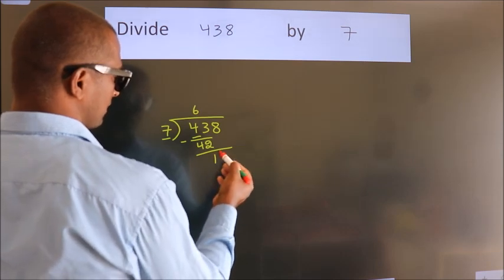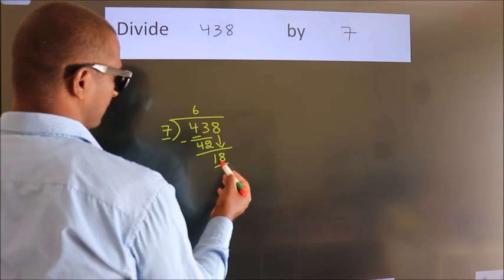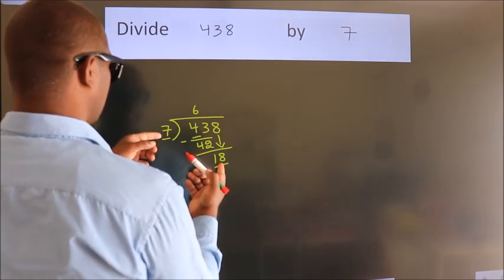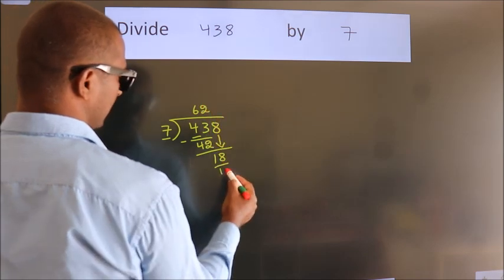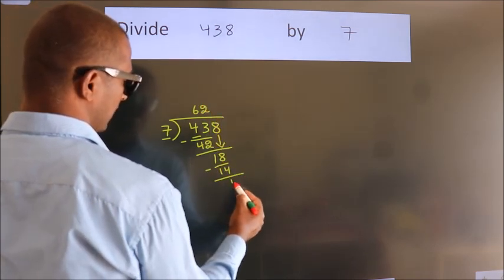After this, bring down the beside number, so 8 down, giving us 18. A number close to 18 in the 7 table is 7 times 2 equals 14. Now we subtract, we get 4.